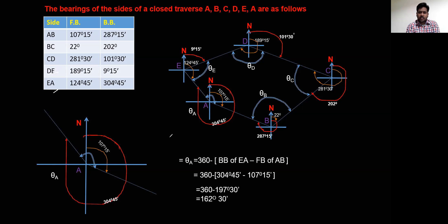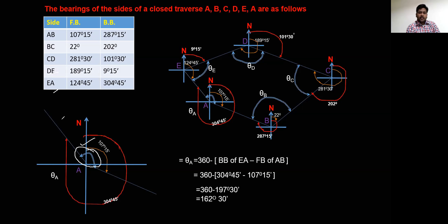Our main intention is to find the included angle. The included angle is the interior angle at each station. To calculate that included angle, we note that the total angle in the full circle is 360 degrees. The angle deviates from the north, so the formula is: included angle theta equals 360 minus back bearing of the incoming side minus fore bearing of the outgoing side.